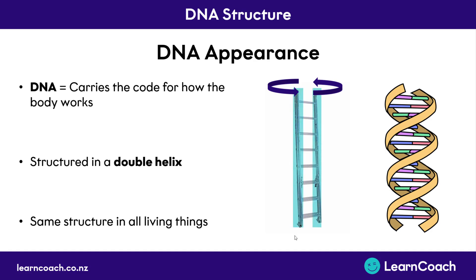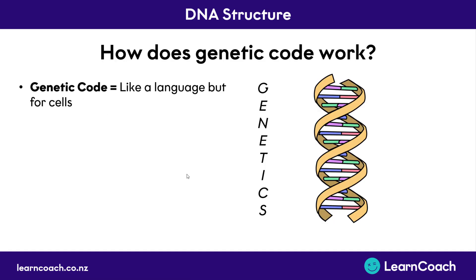The two long parts of the ladder on the left and the right would twist, like these yellow lines here, and these rungs would hold the two yellow lines together. The other important thing is that DNA always has this structure in all living things, so all plants and all animals have the same double helix structure to their DNA.